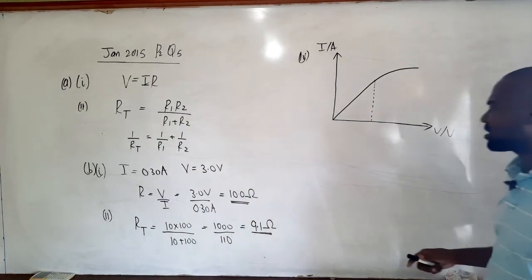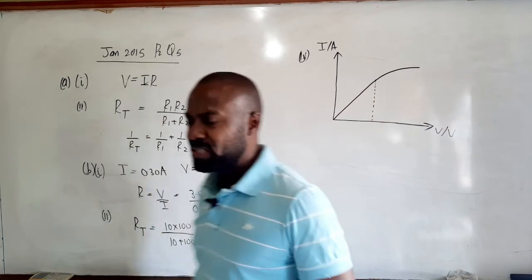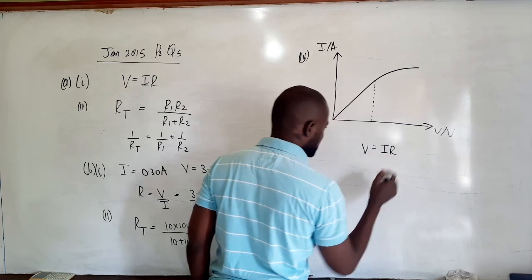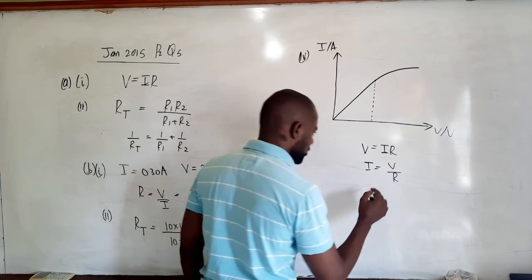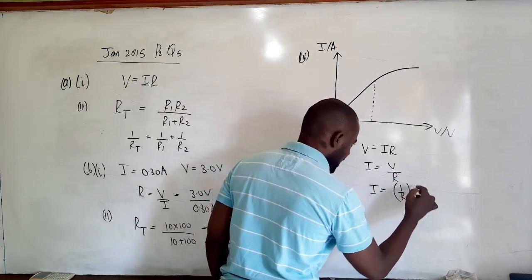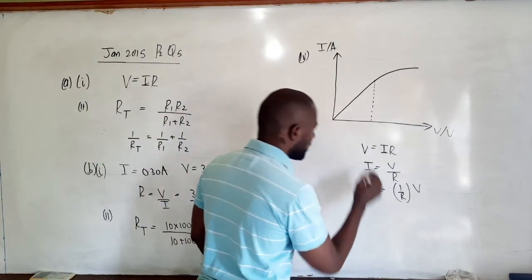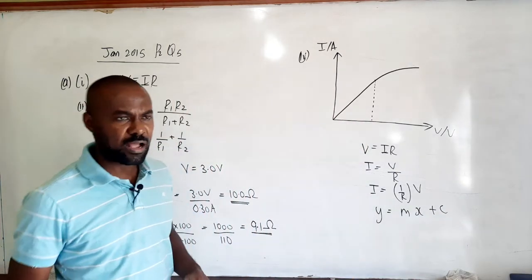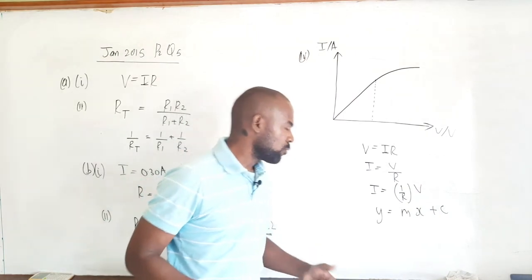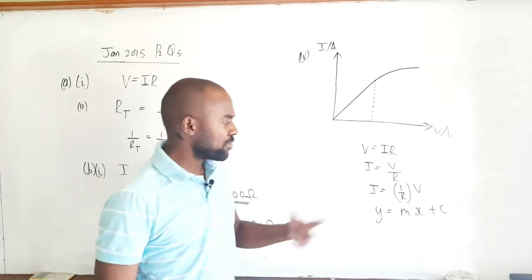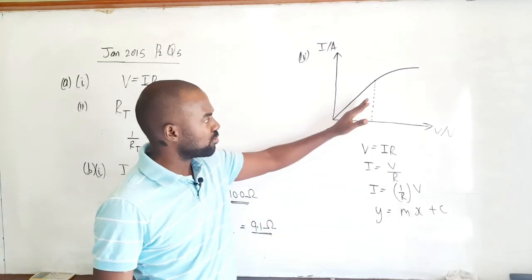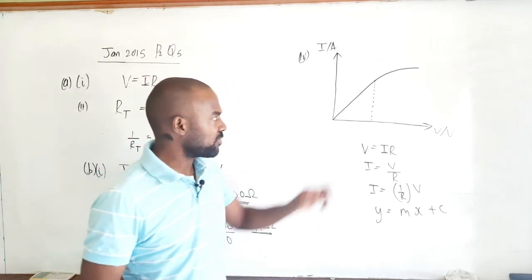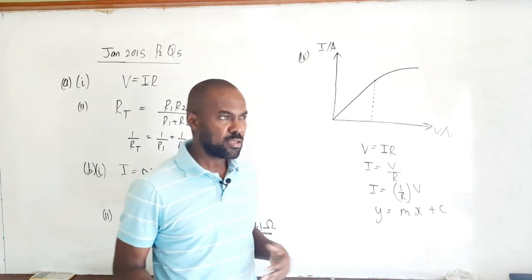From the graph we can see the resistance will not be constant. Since this is a graph of current against voltage, using V equals IR rearranged to I equals (1/R) times V, this is of the form y equals mx plus c. The gradient of the I-V graph gives 1 over R. For the straight-line portion, the gradient is constant, meaning 1/R is constant, so R is constant — resistance is steady in the ohmic region.